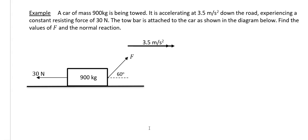Last example says a car of mass 900 kilograms is being towed. It is accelerating at 3.5 metres per second squared down the road, experiencing constant resisting force of 30 newtons. The tow bar is attached to the car as shown in the diagram. Find the value of f and the normal reaction. So a couple more forces to add on your diagram. Always check their diagram. We'll have a somewhat incomplete forces diagram. So just make sure you add on what you need. What I added in was my normal reaction. And I added in my weight, which is your mass M times your acceleration due to gravity G. So 900 G in this case.